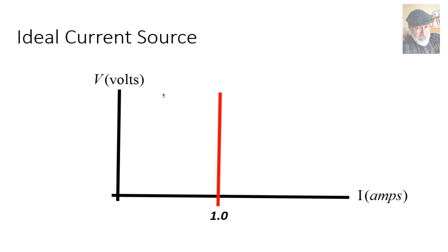And here is the voltage versus current plot of an ideal 1A current source. Its current is 1A at any voltage value.